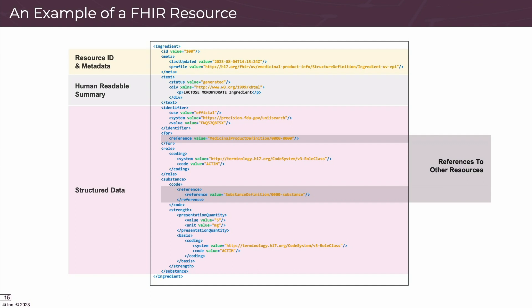Here's an example of a FHIR resource. All resources have an identifier unique to them within the document they represent. They also have a section for metadata about the overall resource, such as the version number and the date and time it was last updated. There's a section that holds the human-readable summary of the resource content, and finally the metadata about what the resource is about. In this case, we have an example of an ingredient.